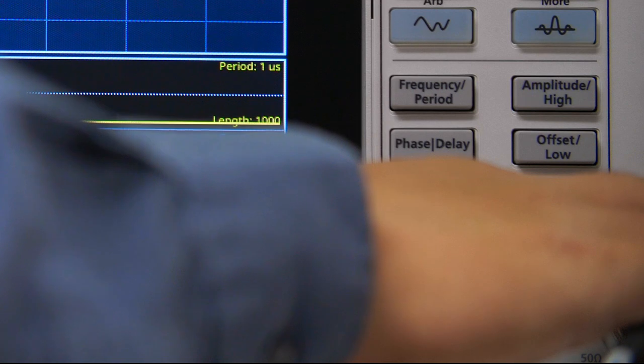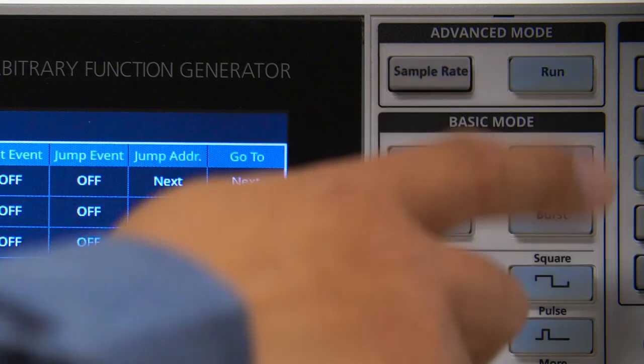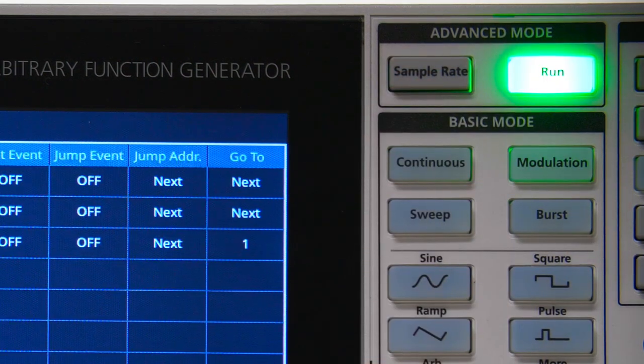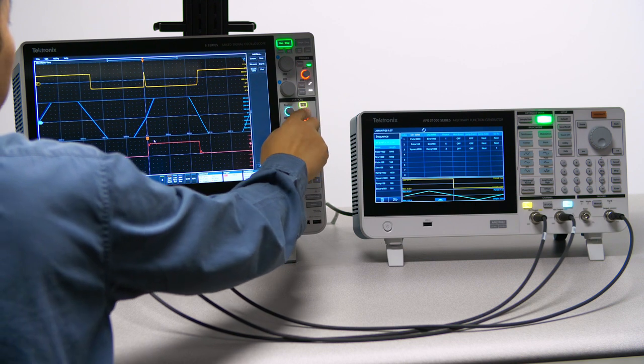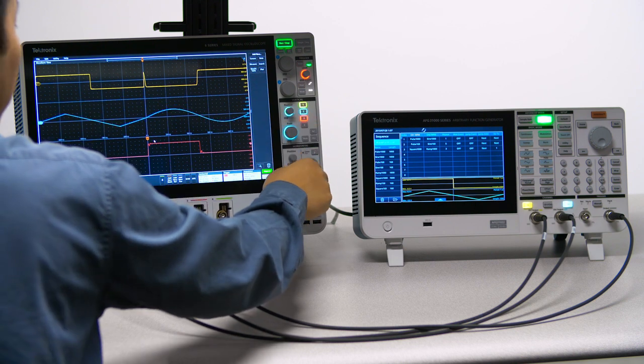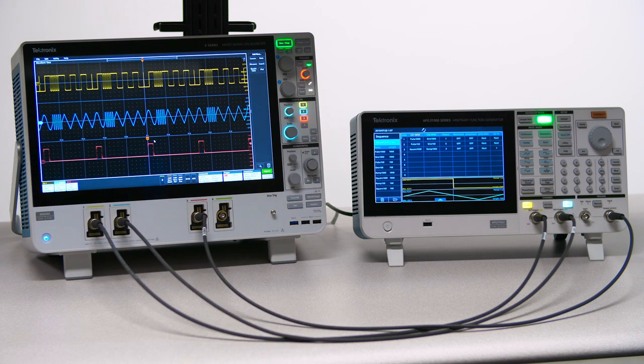Click the On buttons on the front panel to turn Channel 1 and Channel 2 output on. Then click the Run button to start the sequence. Adjust the scope to observe the output waveforms with Channel 1, Channel 2, and Channel 3 as the trigger source.